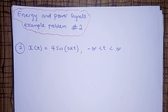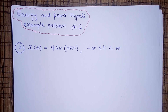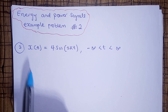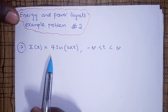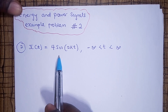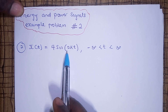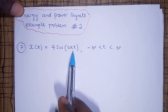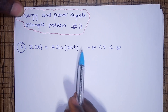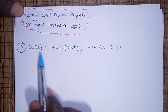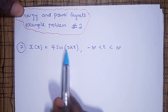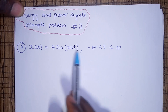So now, we are going to solve the second example problem, which is this. The question says: x of t equals 4 sine 2 pi t.